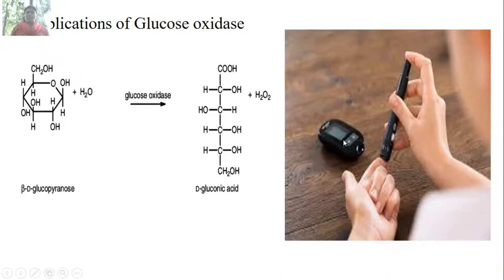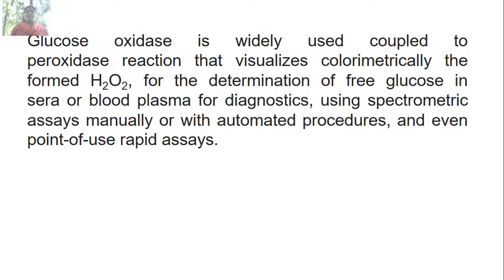This is similar to your biosensors, where when a blood sample is given or dropped, the amount of glucose present in the blood can be visualized in the form of digits, sensed by a transducer showing the amount of glucose in digital form. Glucose oxidase is widely used coupled with a peroxidase reaction that colorimetrically visualizes the formed H2O2 for the determination of free glucose in serum or blood plasma for diagnostics, using spectrometric assays manually or with automated procedures and point-of-use rapid assays.